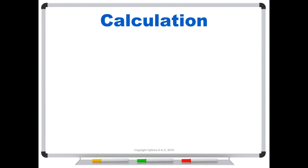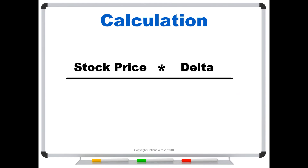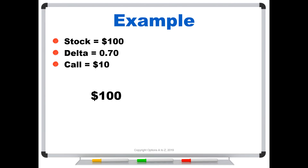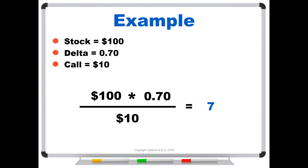So how do we calculate it? The calculation is actually pretty simple. You're going to take the stock price, multiply that times the delta, and divide that number by the option's price — and that gives you the elasticity. For example, let's say the stock is trading for $100, you've got a delta of 0.7, and your call option is trading for $10. All of this is given to you on your broker's platform. $100 times 0.7, divided by the call price of 10, equals 7.